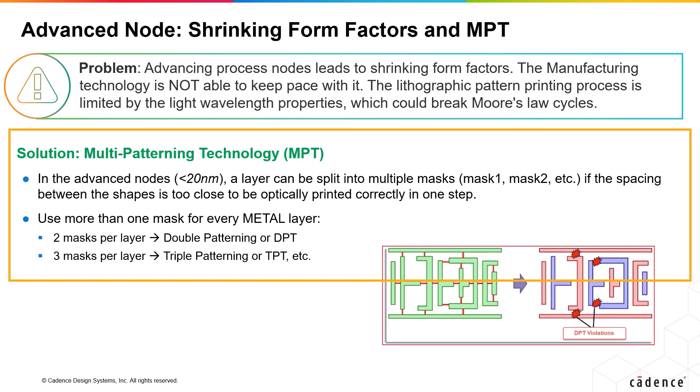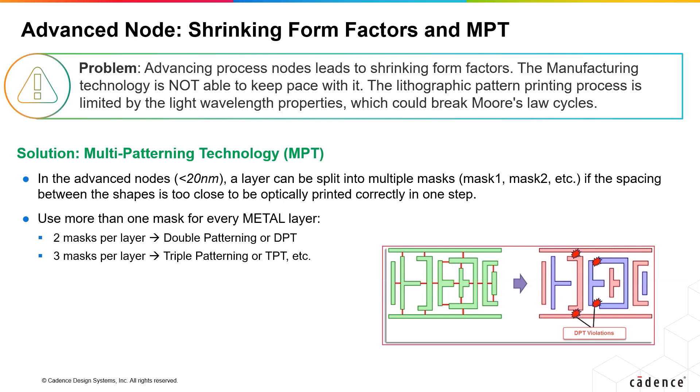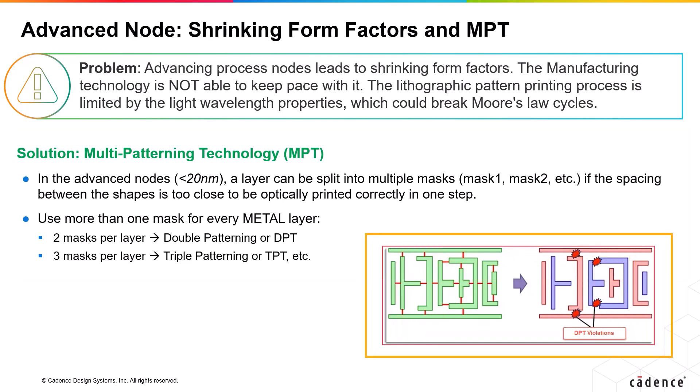MPT implementation in the layout throws out a bunch of challenges. The designer needs to make sure that the final layout conforms to a legally printable DP mask by ensuring that the polygon stack is alternating or sufficiently spaced out between mask one and mask two. Violations in this regard are known as odd loop error.